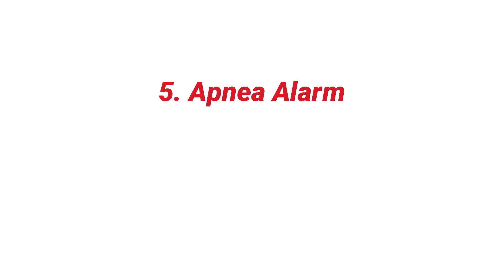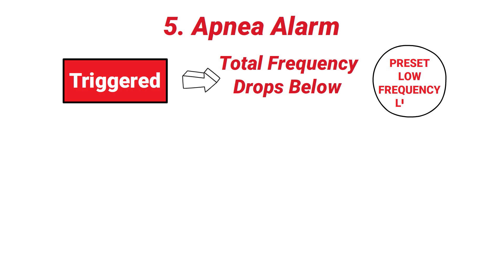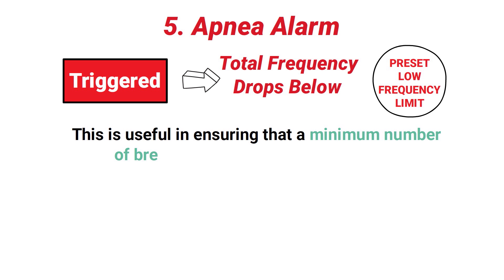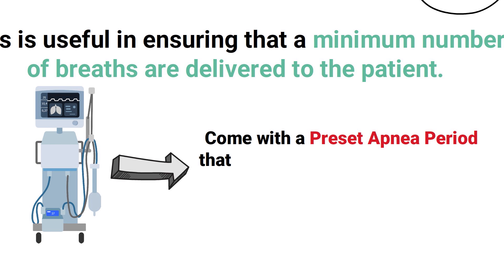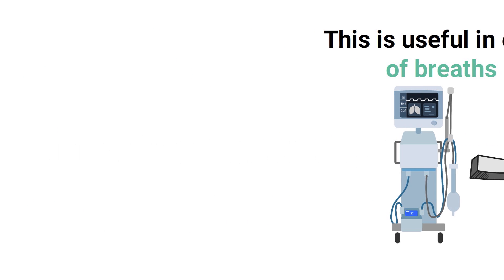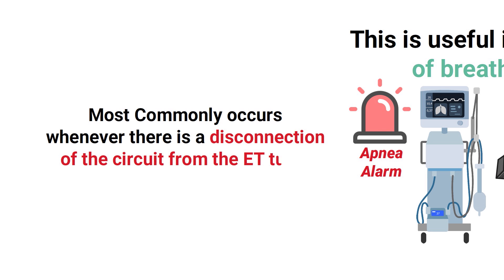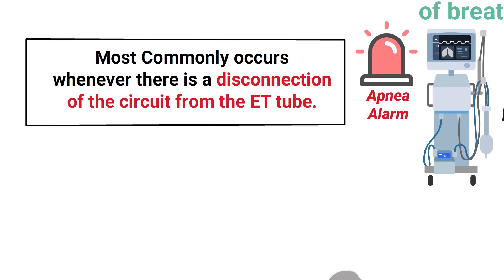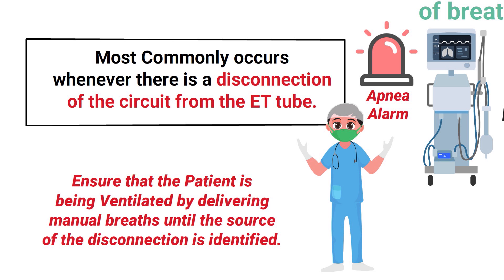Next up is the apnea alarm. An apnea alarm in mechanical ventilation is triggered whenever the total frequency drops below a preset low frequency limit, ensuring that a minimum number of breaths are delivered to the patient. Most ventilators have a preset apnea period of typically around 20 seconds, though some allow the operator to adjust this limit. This alarm most commonly occurs whenever there is a disconnection in the circuit from the ET tube, and the respiratory therapist must ensure the patient is being ventilated by delivering manual breaths until the source is identified.